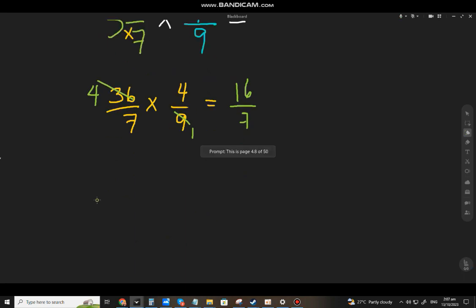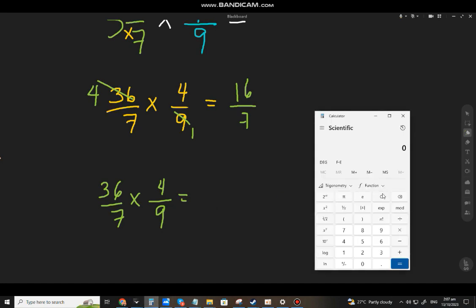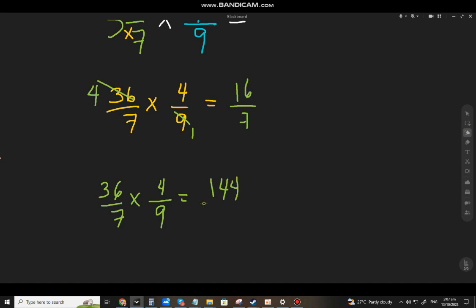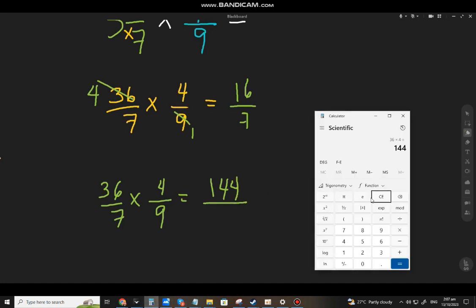Paano pag hindi natin kini-cancel? 36 over 7 times 4 over 9. Papakita ko lang na he will still arrive to the same answer. 36 times 4, gamit na tayo ng calculator para mabilis. 7 times 9, that will be 63.